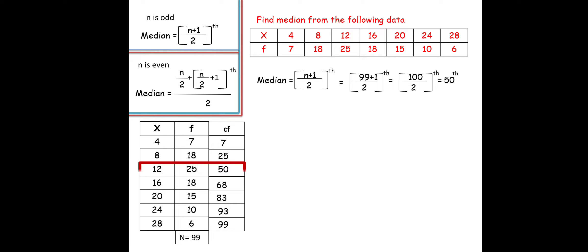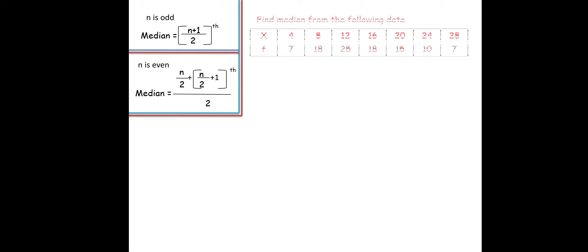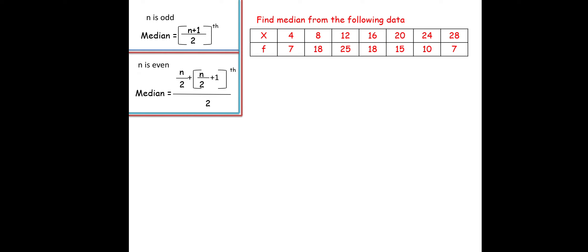The 50th observation falls in the cumulative frequency of 50, so 12 is our median. Similarly, we will look at one more example.